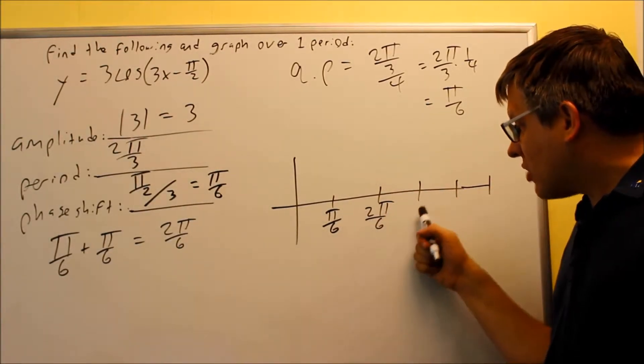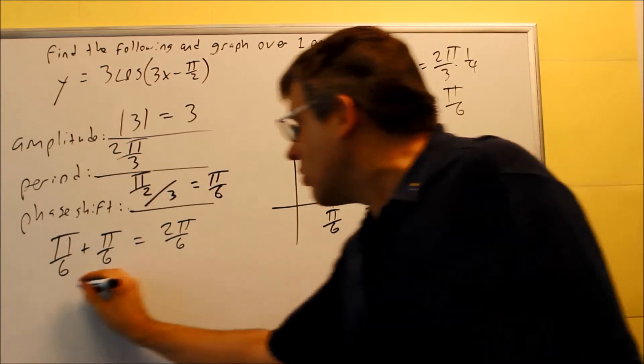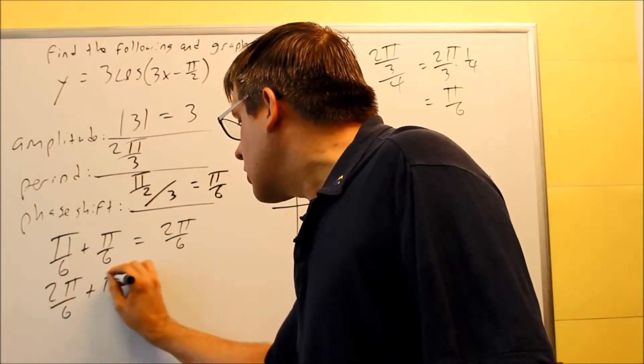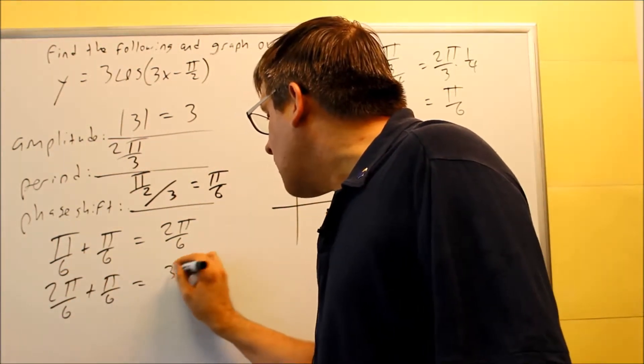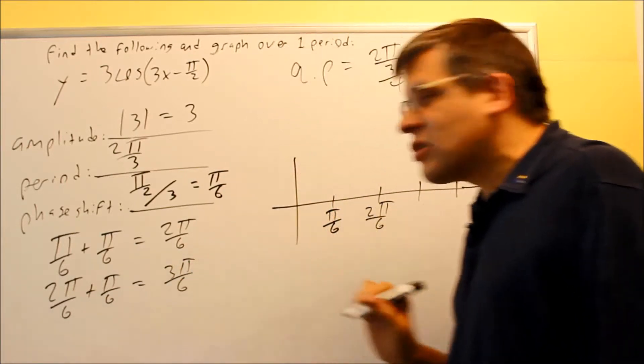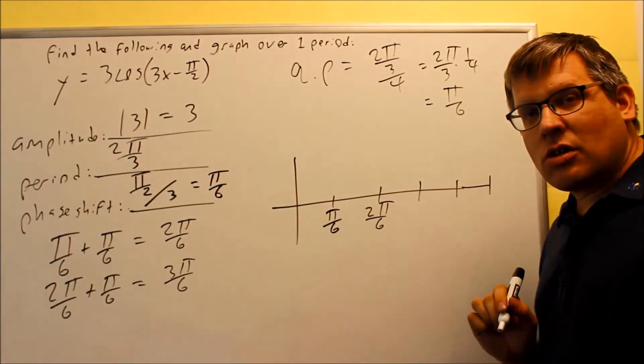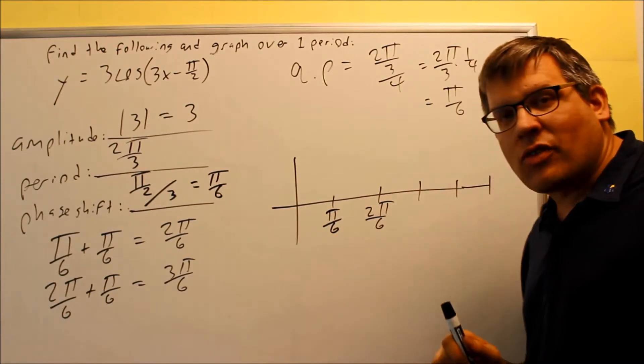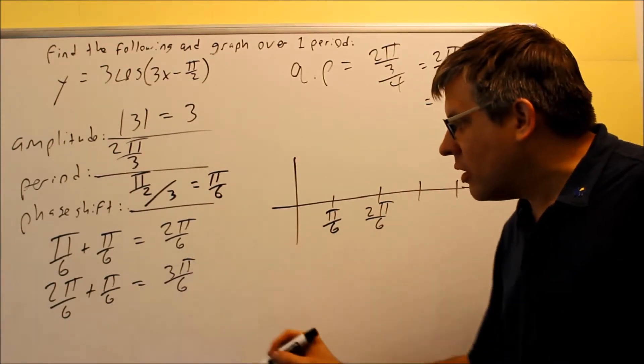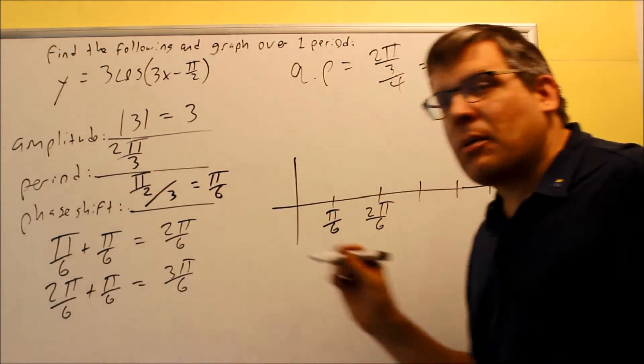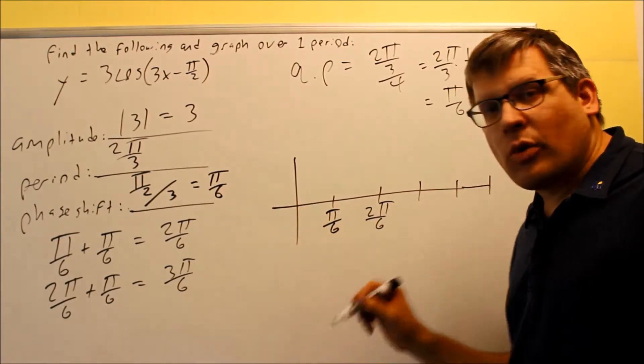So 2π over 6, I know that can be reduced. However, I'm keeping it with a 6 on the bottom because that way it makes it easier. It's easier to add these because all of these have common denominators. If I reduce this one, then I would have to do common denominators again. So I'm keeping them all with a 6.